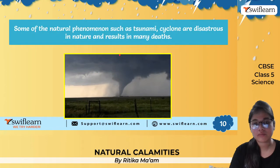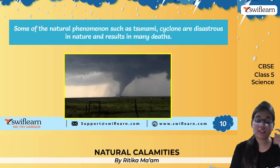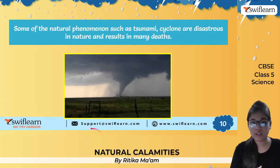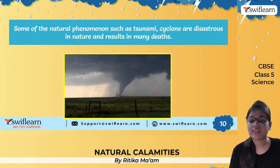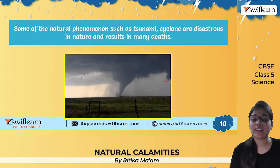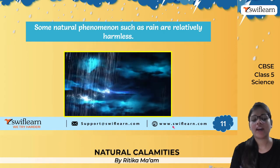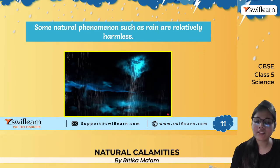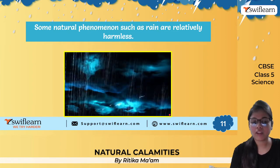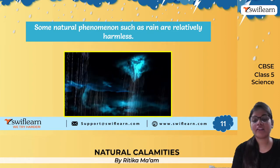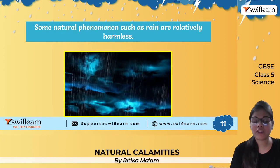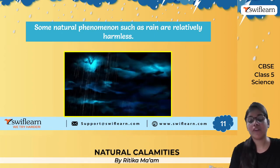Volcanic eruptions, rains, floods, and earthquakes are some natural calamities. Some natural phenomena such as tsunamis, cyclones, and earthquakes are very disastrous in nature — many deaths can occur because of them. Recently, we have had many cyclones and floods which led to many deaths. Some natural phenomena like rains are not harmful, but if rain becomes very heavy, it can turn into a flood, which will be very dangerous.